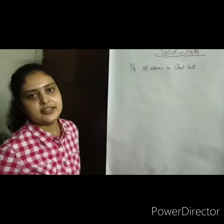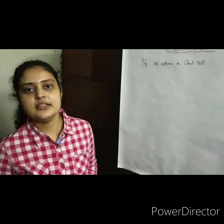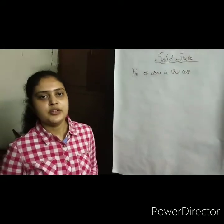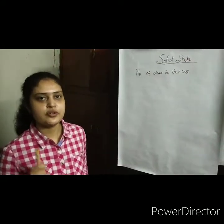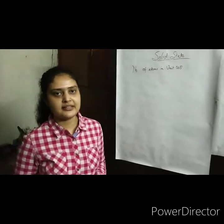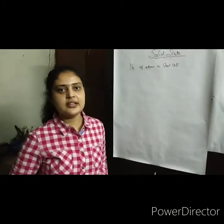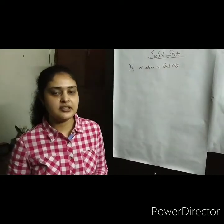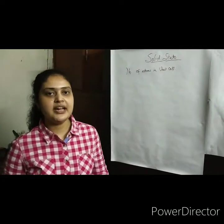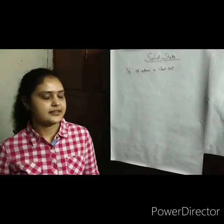First we will study what is the unit cell. A unit cell is the smallest portion of a crystal lattice which, when repeated in different directions, will produce the entire lattice.